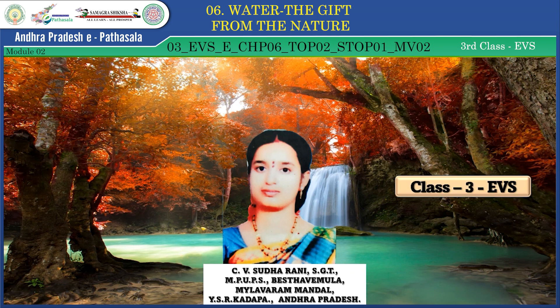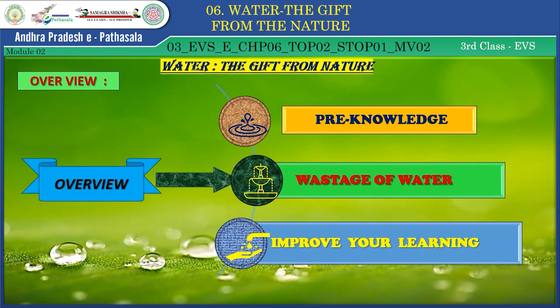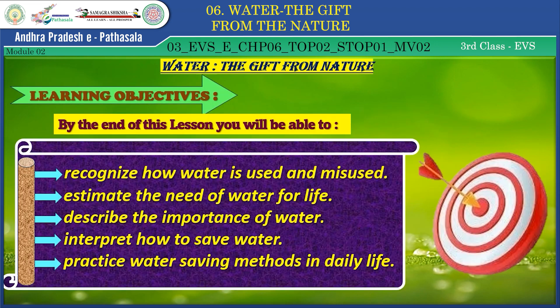Before going to the lesson, we have to see the overview. Look at this overview of module 2: first, pre-knowledge; second, wastage of water; third, improve your learning. The learning objectives are: by the end of this lesson you will be able to recognize how water is used and misused, estimate the need of water for life, describe the importance of water, and interpret how to save water and practice water-saving methods in daily life.